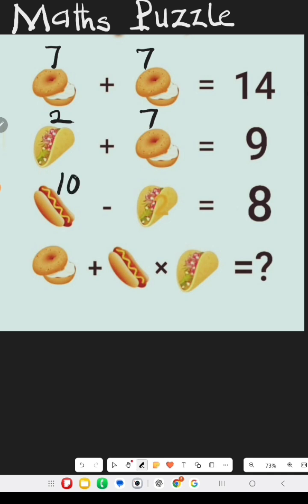And we have hot dog which is 10 and 2. 10 minus 2 equals 8. Then finally we have donut which is 7, hot dog which is 10, and wrap which is 2.